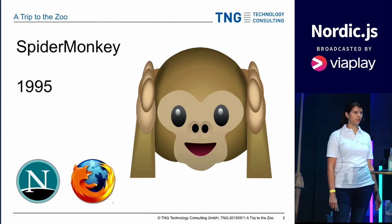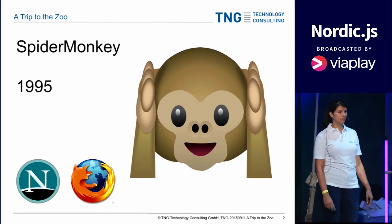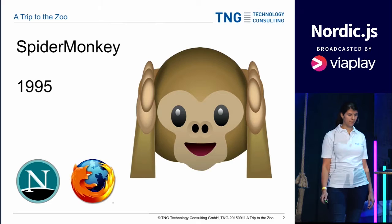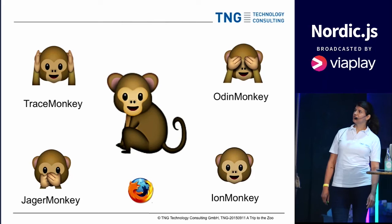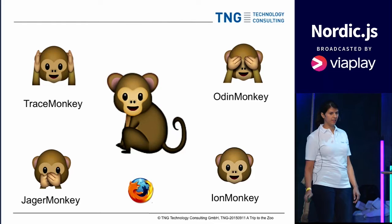1995, the cute spider monkey came along — that was the very first JavaScript engine. Back then it was in Netscape Communicator, and after several rewrites it's the JavaScript engine we're using in Firefox today. Of course, SpiderMonkey comes with his monkey friends: TraceMonkey, JägerMonkey, IronMonkey, and OdinMonkey. They help SpiderMonkey speed things up.